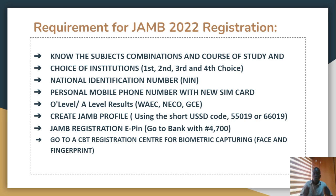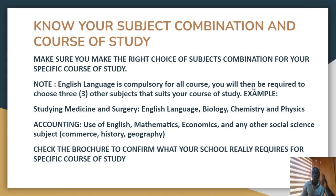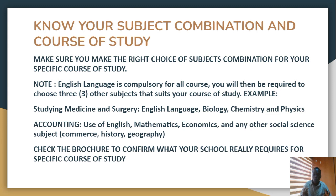You should also do the following you are seeing on the screen. We are going to take this one after another, and that is why I say you should stick around to the end of this video. The first thing you need to know is your subject combination and course of study. JAMB will always want candidates to choose four subjects — English Language is compulsory for all courses, and the other three subjects will be required to suit your course of study.